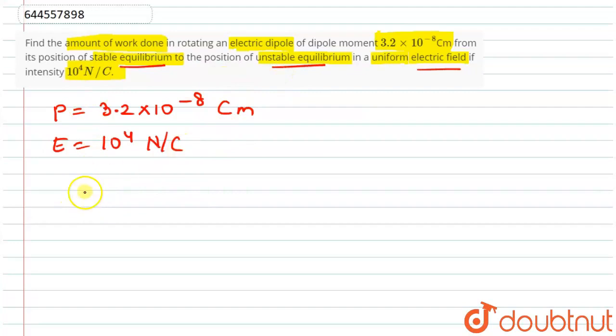Let's find what the values are. What is the formula? Work done is pE(cos θ₁ - cos θ₂), where θ₁ is the initial position and θ₂ is final.